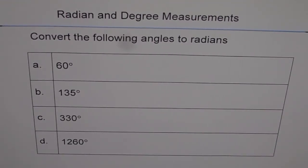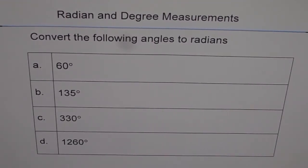It is the next question in your test paper. Convert the following angles to radians. Copy the question and answer them. A. 60 degrees, B. 135 degrees, C. 330 degrees, and D. 1260 degrees. Now, here is my solution.